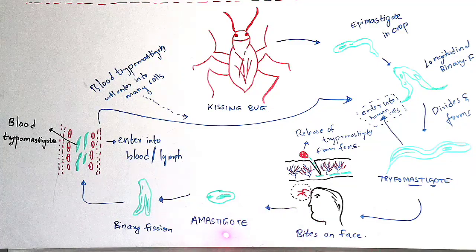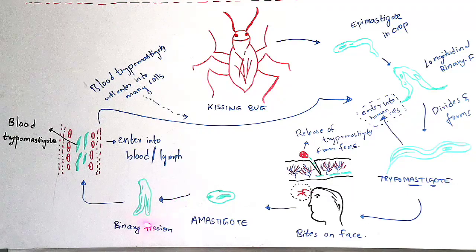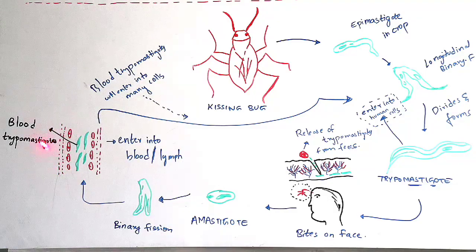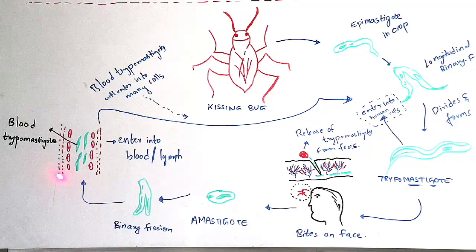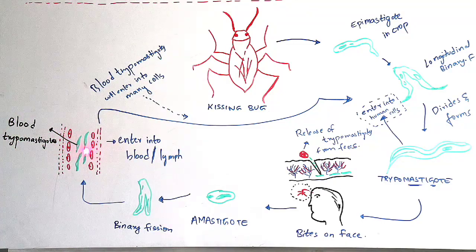The amastigotes present in the head region undergo longitudinal binary fission. The daughter individuals formed after this division enter into the blood of the man. The red colored structures drawn here are the red blood cells, and the green colored ones are the trypomastigotes. The trypomastigotes present in the blood are called blood trypomastigotes, and these blood trypomastigotes enter into many cells and other tissues.